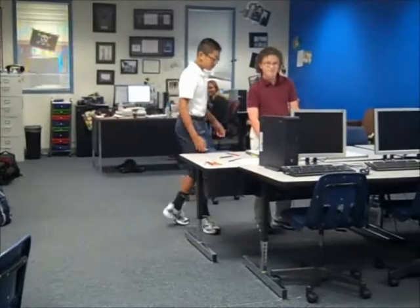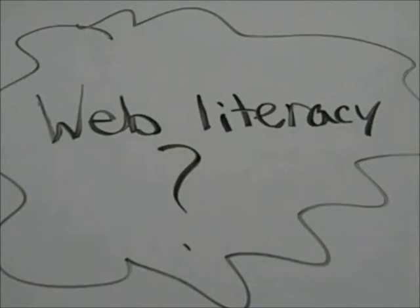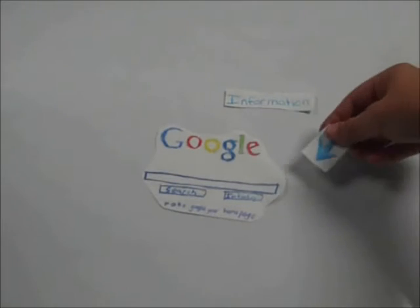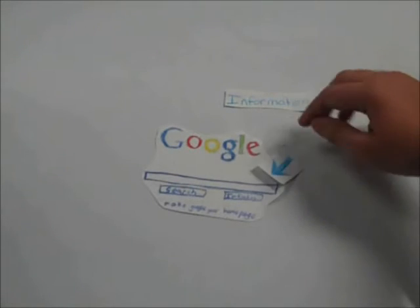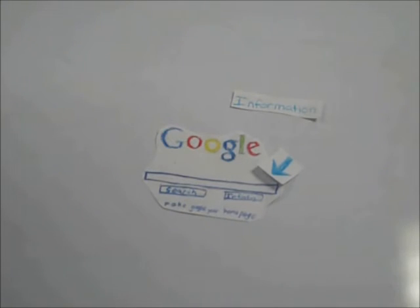Here we go. So now I'm gonna show you what web literacy is. Let's go to Google. So normally when you're looking for something, you put some stuff about the information you're looking for in the box. And then you'd press the search button. And you'd come up on a page that looks like this, with all the search results.